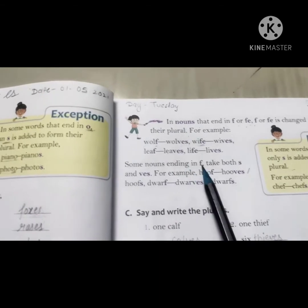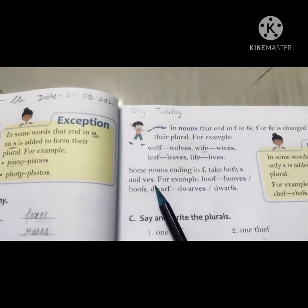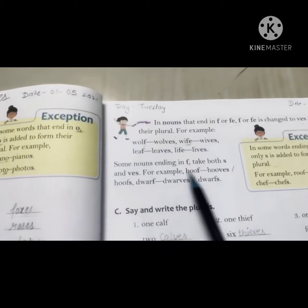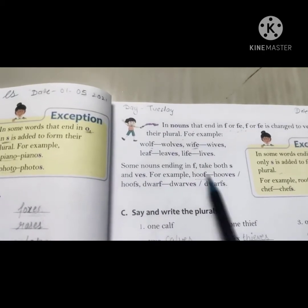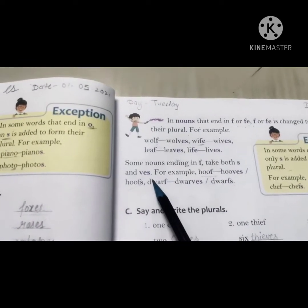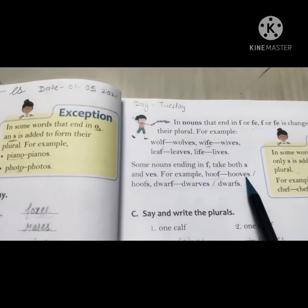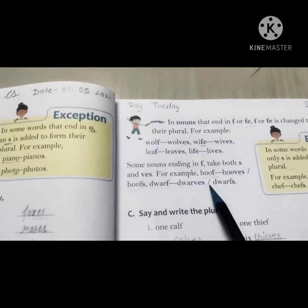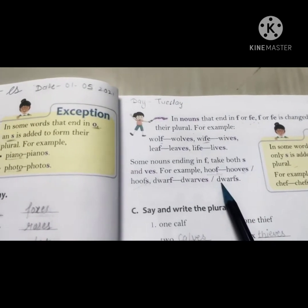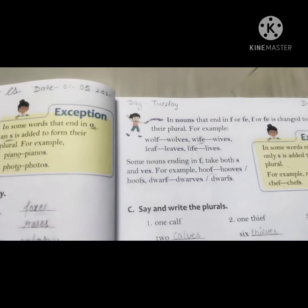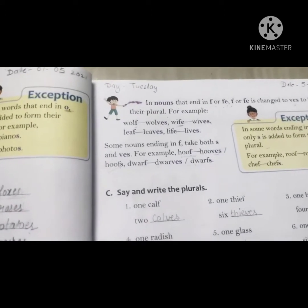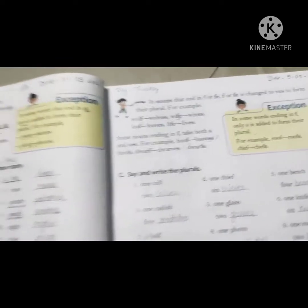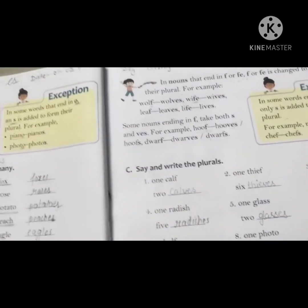There is one more case: some nouns ending in 'f' take both 's' and 'ves'. For example, 'hoof' — if we add 's' we get 'hoofs', which is correct, and if we remove 'f' and add 'ves' we get 'hooves', which is also correct. Similarly, 'dwarf' — both 'dwarfs' and 'dwarves' are correct. So these exceptional cases need to be learned and kept in mind.